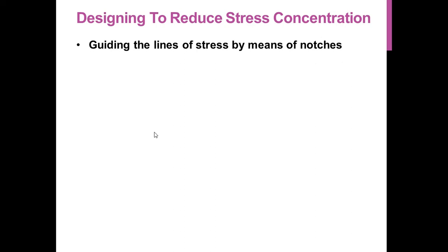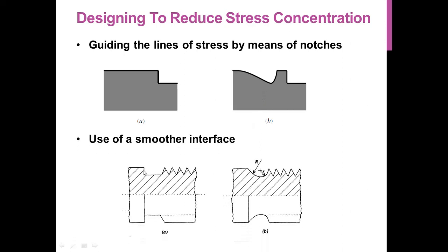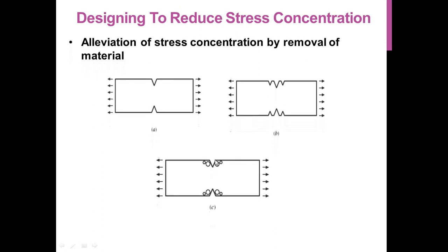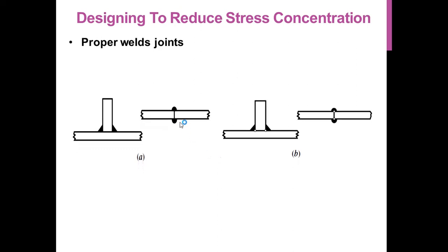Some methods to reduce stress concentration: first, guiding the lines of stress by means of a notch, so that compared to a sharp depth in section, as in diagram B, you can reduce stress concentration. Second, use of a smoother interface — in diagram A a sharp depth is seen, while after using a smooth interface you can avoid stress concentration. Next, removal of material is another method. Also, using proper weld joints — if weld joints are as in figure A it causes stress concentration, so proper weld joints as in figure B should be used.